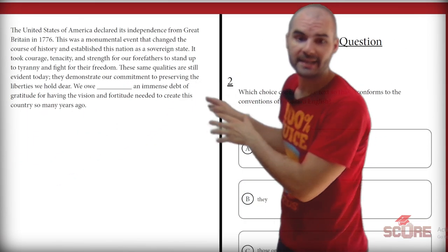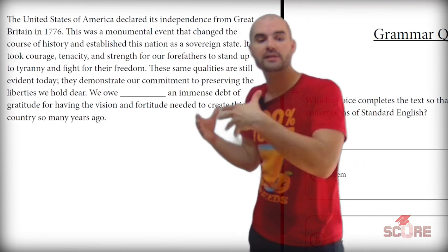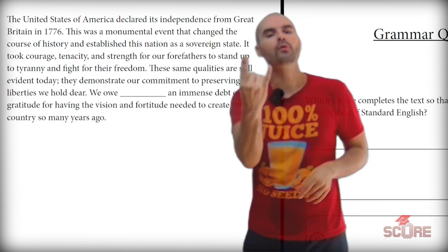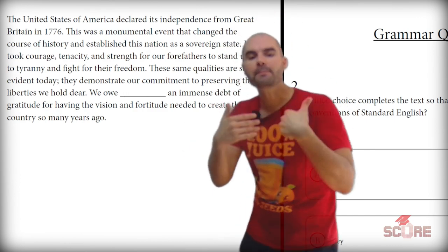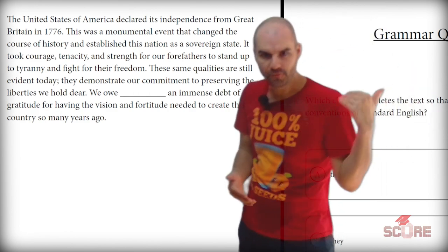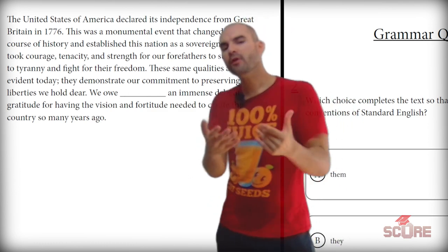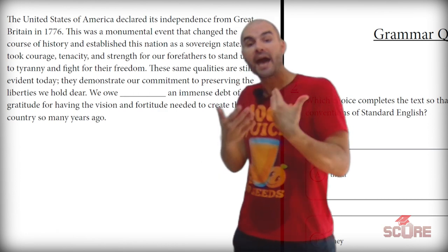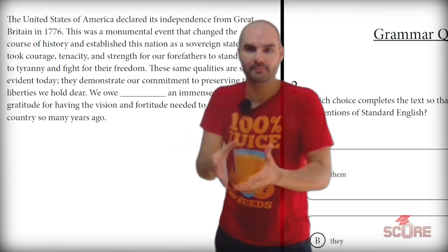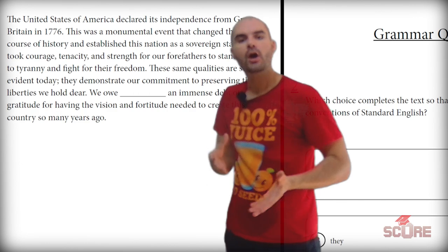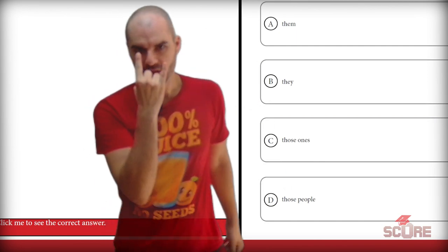Looking at the previous sentences: 'These same qualities are still evident today. They demonstrate our commitment to preserving the liberties we hold dear.' The previous sentence uses two plural words — qualities and liberties — and I don't think I'm referring to those. Going further back, the text mentions 'strength for our forefathers to stand up to tyranny and fight for their freedoms.' Forefathers are the people we're talking about. Since we haven't mentioned them in a while, it would be good to remind the reader we're talking about 'those people' to avoid ambiguity. So the answer is 'those people.'